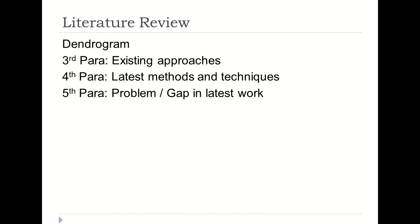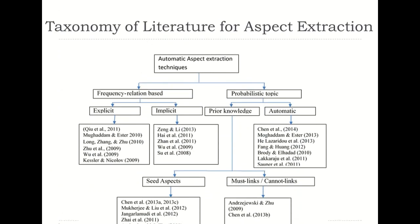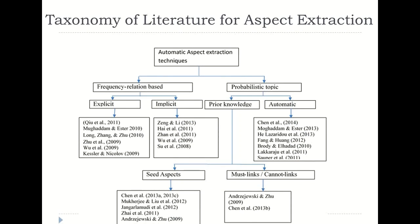Next we come to literature review or background study. Here you mention all the articles you have studied that are relevant to the problem you are addressing. It is my personal opinion that you should start your literature review with a dendrogram of the literature you have studied, giving the reader a holistic view of what to expect in this section. It should look something like this — with the title being the taxonomy of the literature studied for a given problem.